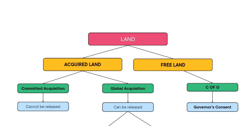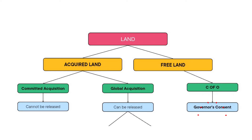So if you happen to buy a land that is freehold or free land, all you need to do — as you can see on the right of the diagram — is to perfect your title to Certificate of Occupancy. That is, if you are the first owner of that land to register it. Now, subsequent owners who buy that land from you, if they want the title in their personal name, would have to perfect the title to Governor's Consent.